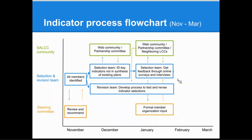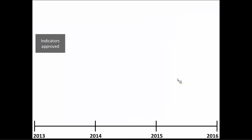Into February and March, they went and selected the first round of indicators, figured out what the revision process would be, sent it to our steering committee, and the final decision was back in March. So from about a year before when we had the approved strategic plan, we went through figuring out our process and actually had our first round of indicators approved in 2013.